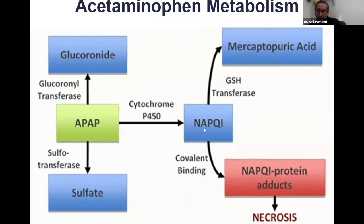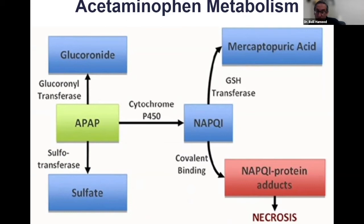NAPQI is a metabolite that is normally rapidly metabolized by glutathione transferase (GSH) into a non-toxic metabolite called mercapturic acid. When you take excess acetaminophen, the glutathione enzyme gets saturated and the rest becomes an NAPQI protein adduct, which is not only hepatotoxic but can also cause kidney injury — leading to acute tubular necrosis in many patients.